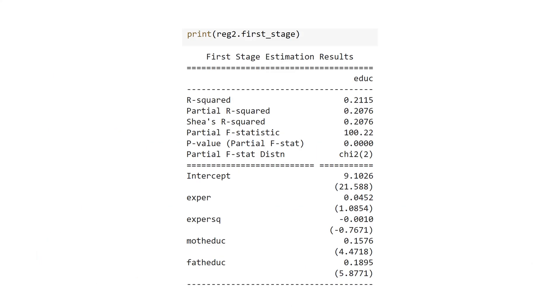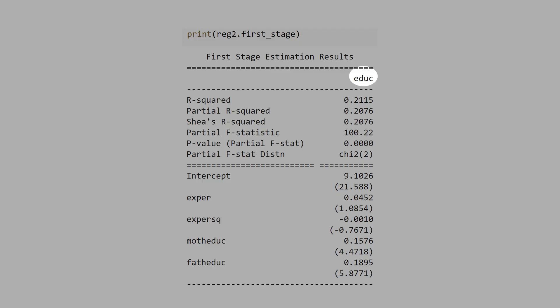Now, let's see the first stage result. The outcome variable in this regression is education. We are interested in the instrumental variables mother education and father education.